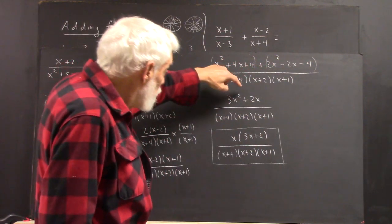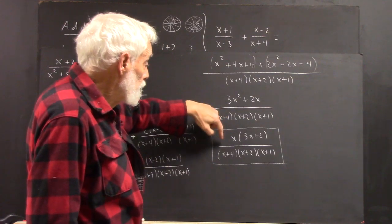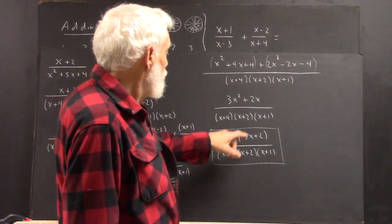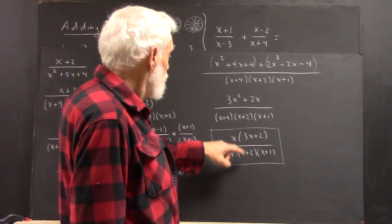If you use the distributive law on x minus 2 times x plus 1, you get x squared minus x minus 2. If you multiply through by 2, you get 2x squared minus 2x minus 4.